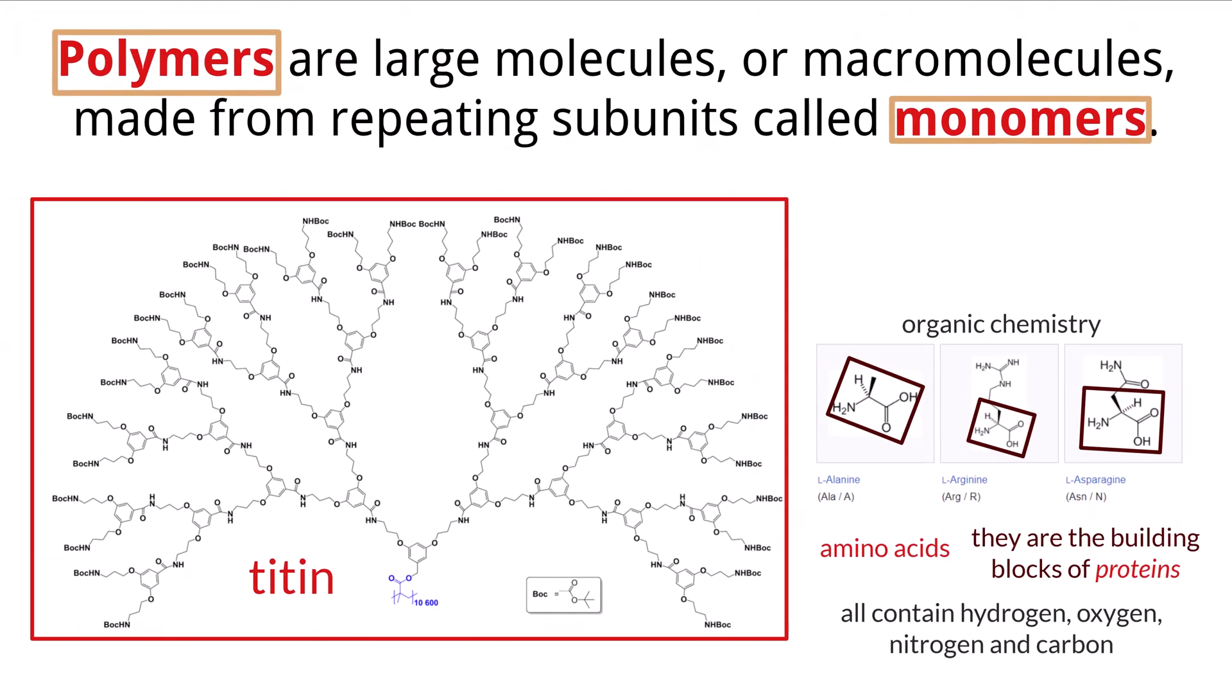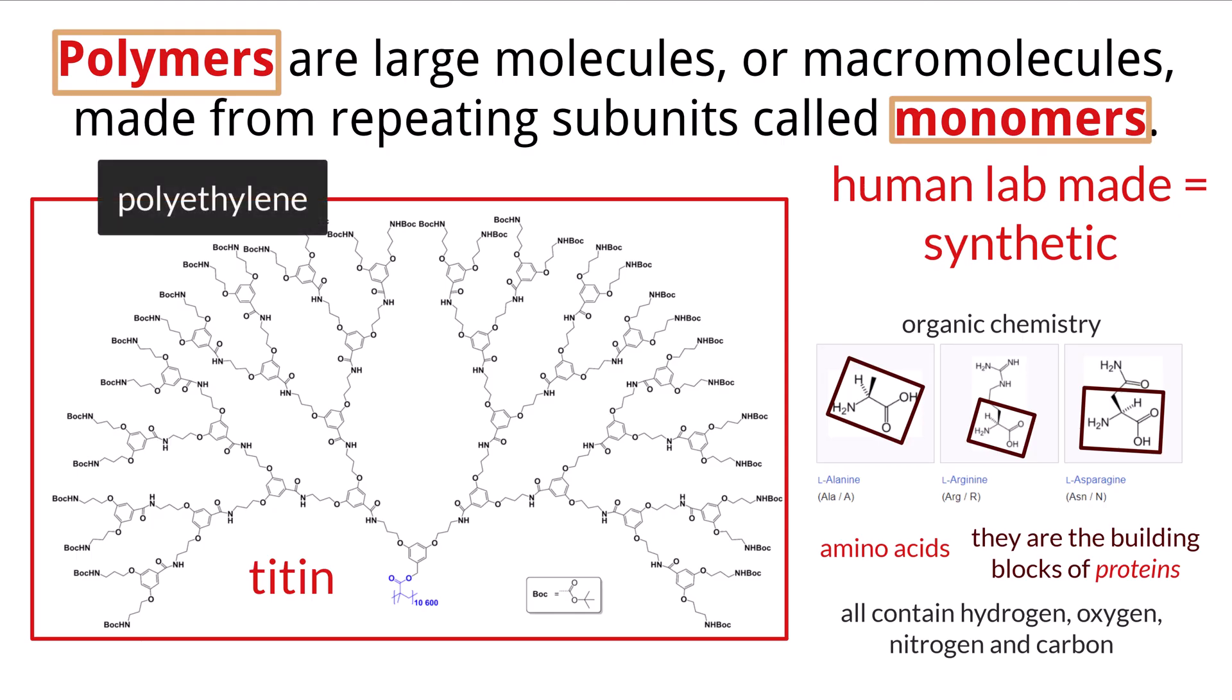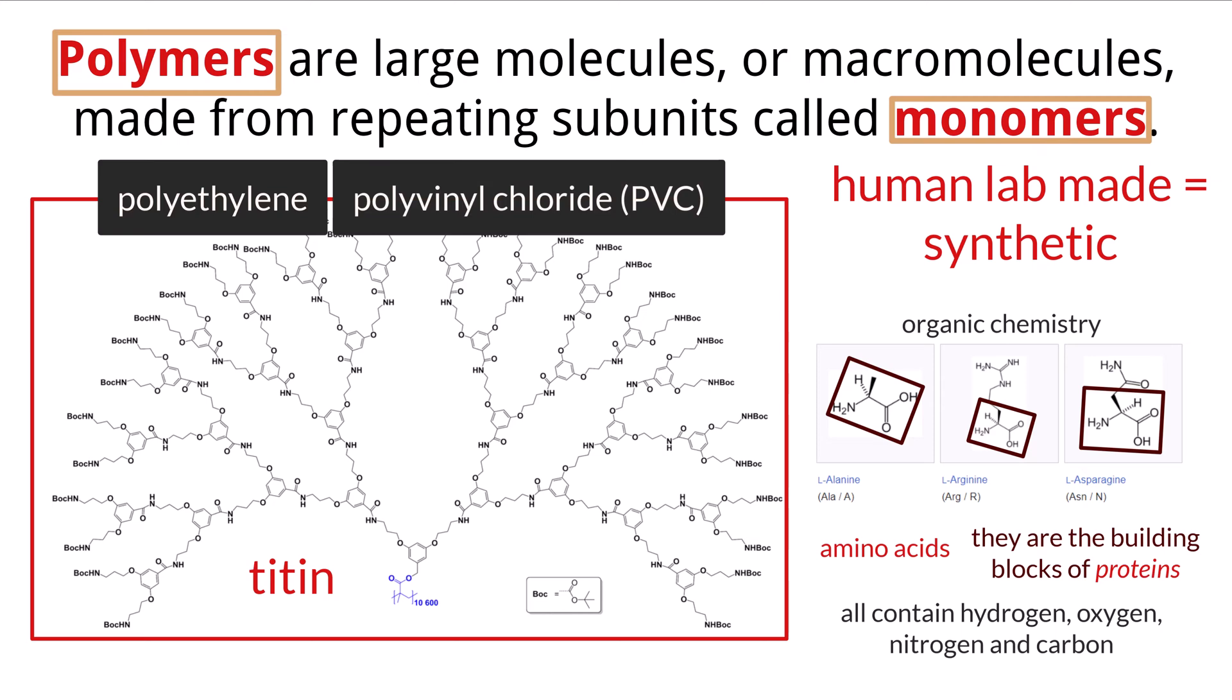We call human-made polymers synthetic polymers. Synthetic polymers are a fascinating and versatile group of materials that play a crucial role in our daily lives. One of the most well-known synthetic polymers is polyethylene, used to make a variety of products like plastic bags and bottles. Another important synthetic polymer is polyvinyl chloride, PVC, which we find in applications in pipes, electrical insulation, and vinyl records.